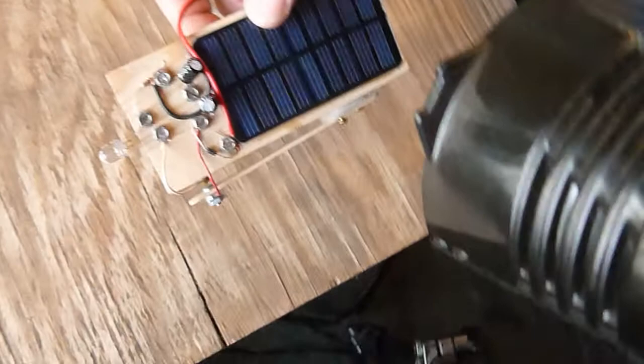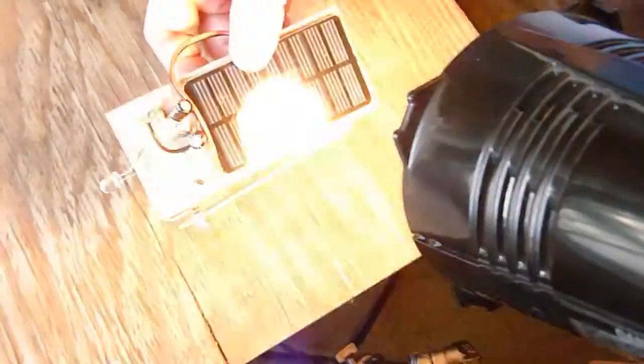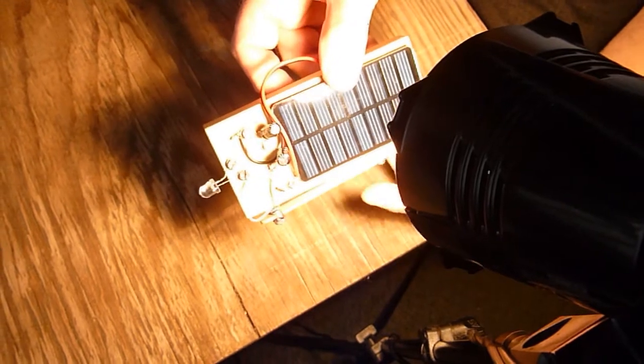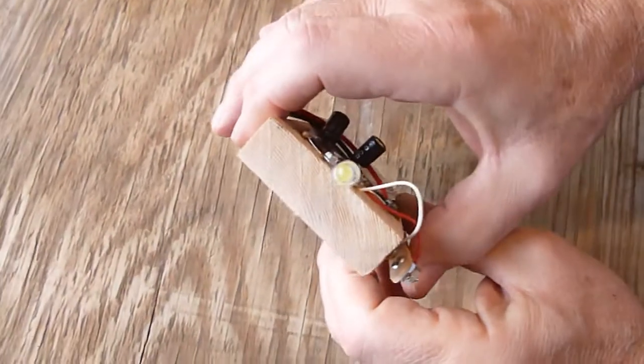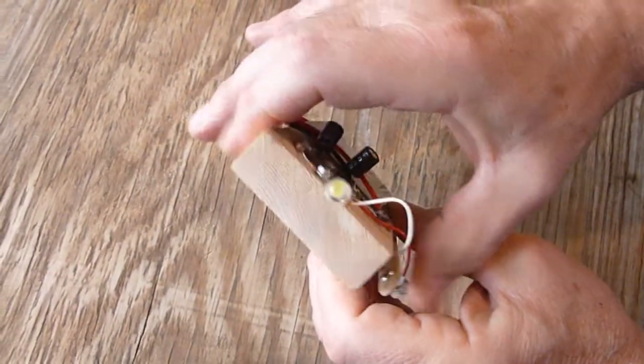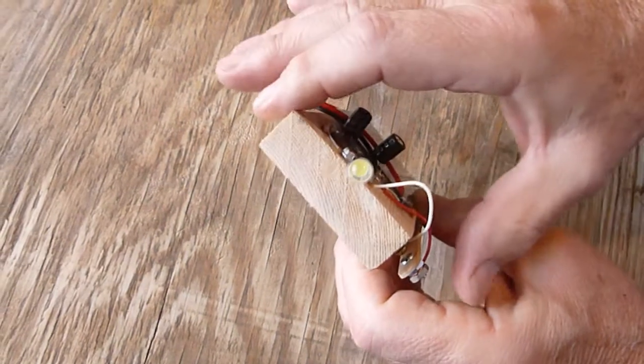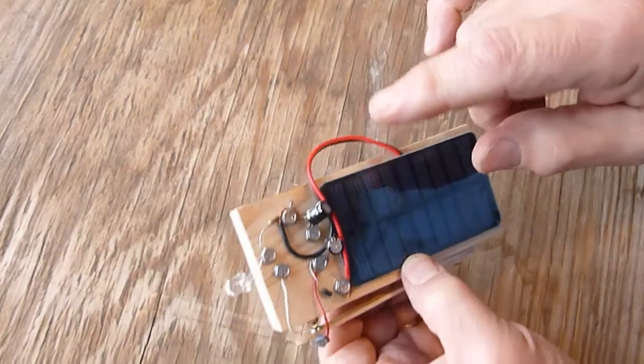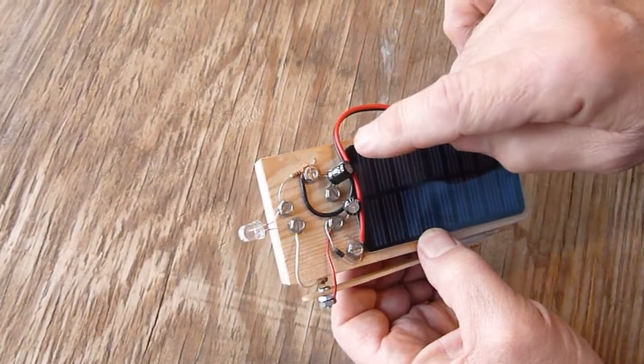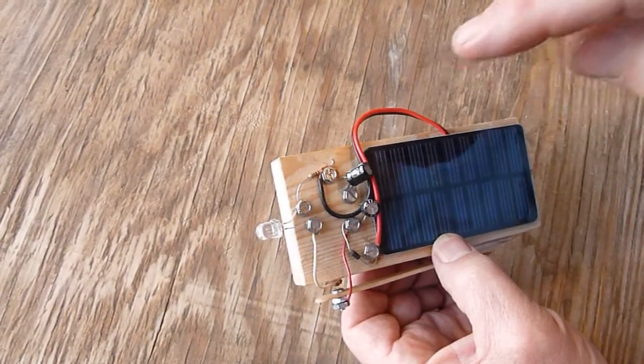Now we take a moment to put intense light on this solar panel, just for a few seconds. And now we will see if there is any charge. We charge these capacitors in those few seconds. That's one of the advantages of capacitors over rechargeable batteries. They can be charged very quickly.